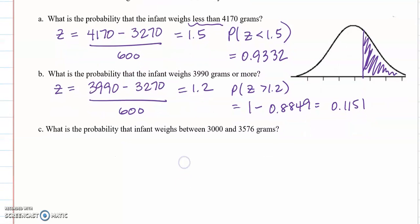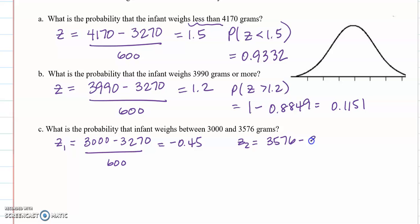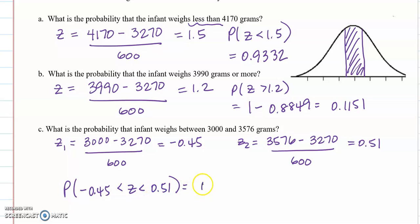Letter c what is the probability that the infant weighs between 3,000 and 3,576 grams? So you need to find two different z scores. I'm going to call them z1 and z2. And here is negative 0.45 and here is positive 0.51 and we want the probability of between. So we can express it like this and that'll mean the bigger probability of 0.51 minus the lower probability of this value. So 0.6950 minus 0.3264 is 0.3686.